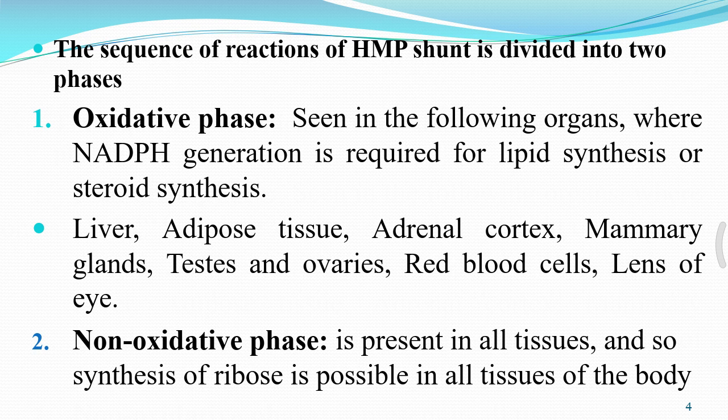The sequence of reactions of HMP shunt is divided into two phases: the oxidative phase and the non-oxidative phase. The oxidative phase occurs in several organs including liver, adipose tissue, adrenal cortex, mammary glands, testes and ovaries, RBCs, and lenses of the eye. NADPH generation is required for lipid synthesis or steroid synthesis. The non-oxidative phase is present in all tissues, and synthesis of ribose is possible in all tissues of the body.